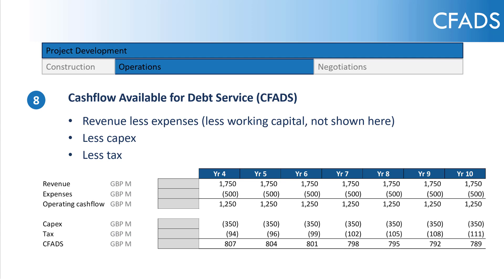Filling that out — reasonably simple. Revenues are flat, expenses are flat, and that gives us a flat operating cash flow. Capex is also flat, but tax has been calculated and it changes over time. So we end up with a slightly variable CFADS of about £800 million.